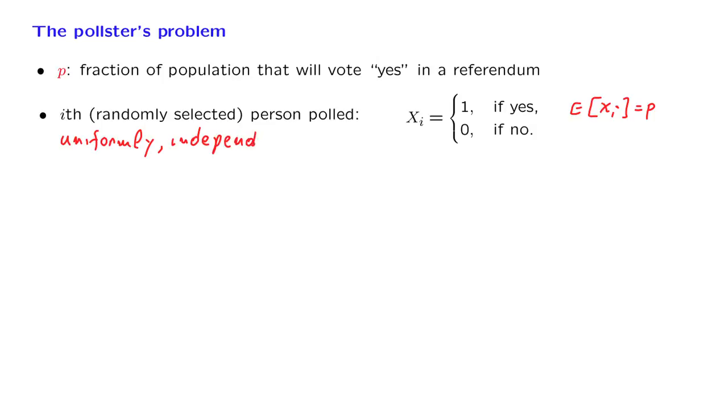Now, note that if we select people independently, there's always a chance that the first person polled will be the same as the second person polled, something that we do not really want to happen. However, if we assume that the population is very large, or even idealize the situation by assuming that the population is infinite, then this is never going to happen, and this will not be a concern.